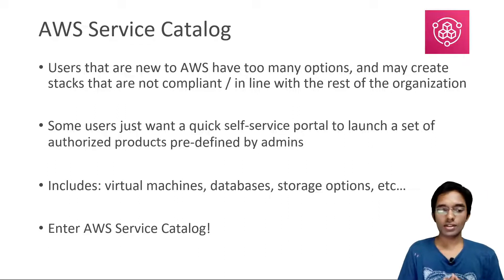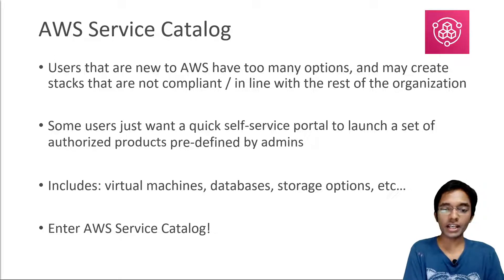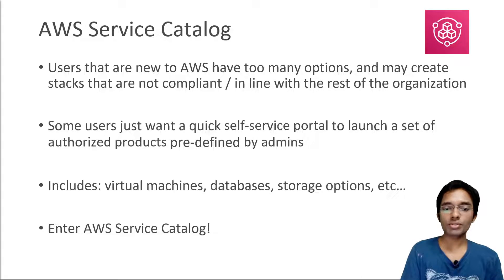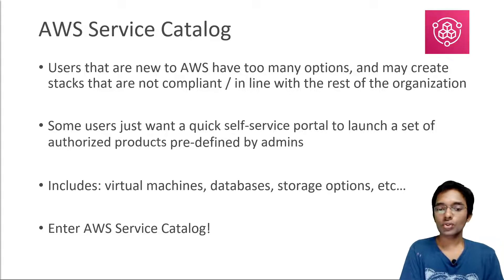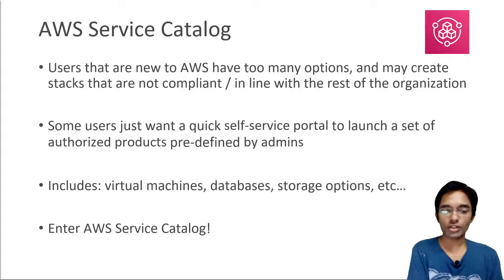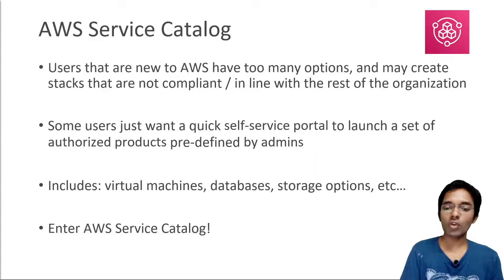Next, let's talk about the AWS Service Catalog. This is for users that are new to AWS who will have too many options to create stacks and may create stacks that are not compliant or in line with the rest of the organization. So we want to provide these users with a self-service portal where we will be launching authorized products, which will be predefined by administrators — for example, virtual machines, databases, storage options such as Elastic File System, etc. The idea is that with Service Catalog we are giving users a controlled environment to deploy on AWS.